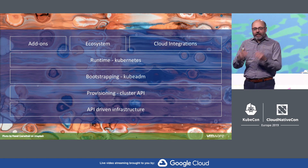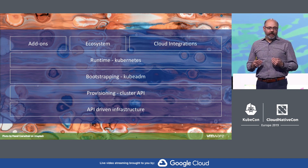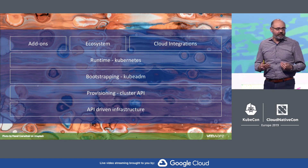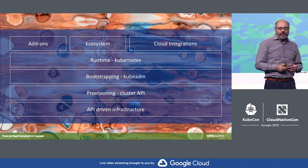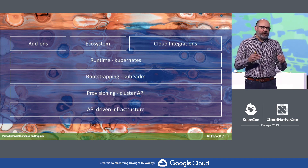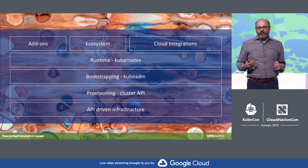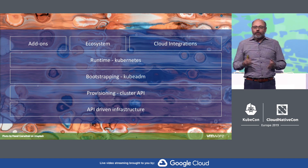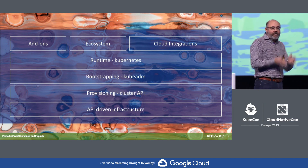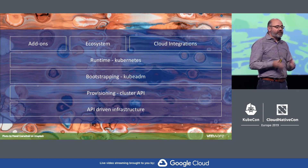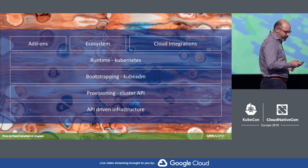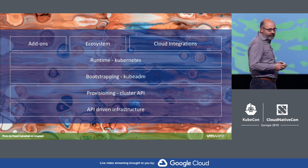What we're doing now is attacking the next layer down — provisioning. How do you get the machines that you're actually going to be running these things on top of? This is through a project called Cluster API. We're going beyond this — we're actually using Kubernetes to manage Kubernetes. We're using the API patterns and control patterns that have proven so well for managing things like pods, for managing machines as they run on top of clouds and other API-driven infrastructure.